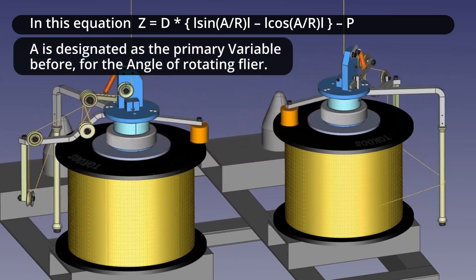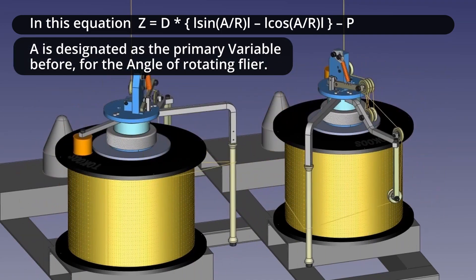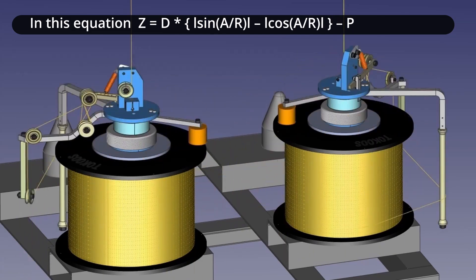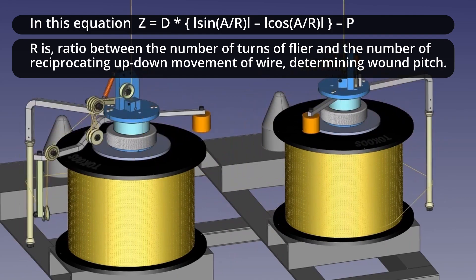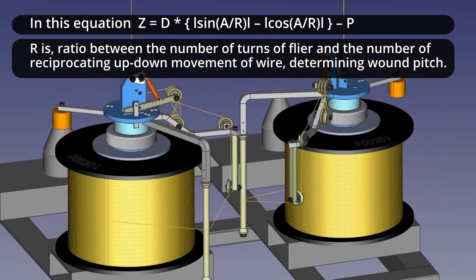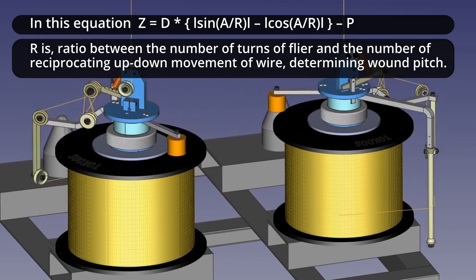A is designated as the primary variable before for the angle of rotating flyer. R is ratio between the number of turns of flyer and the number of reciprocating up-down movement of wire, determining wound pitch.